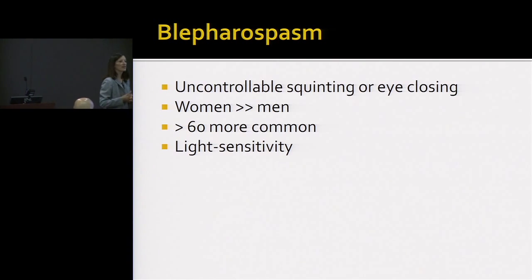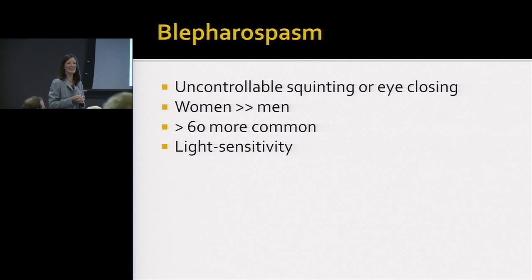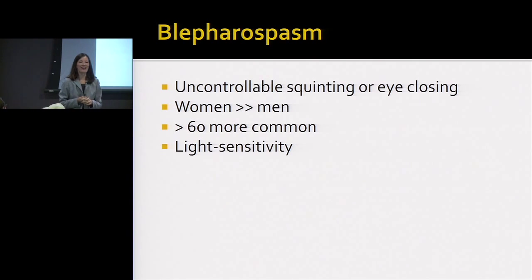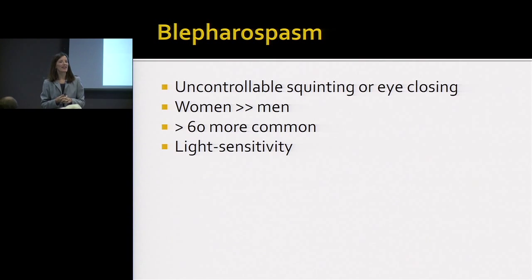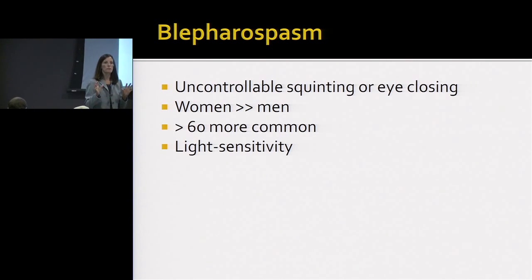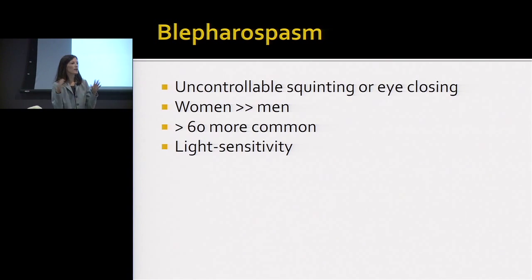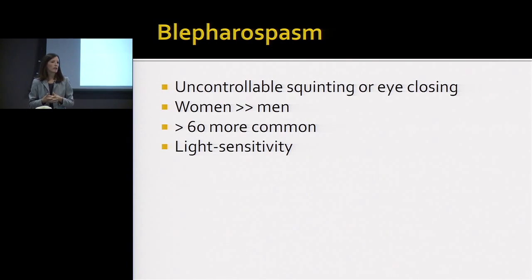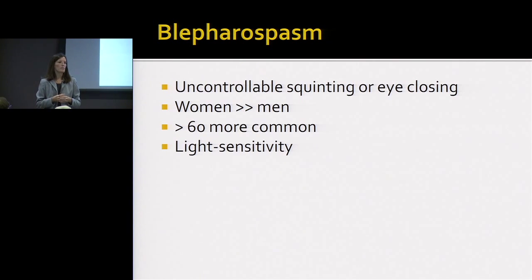There was a video of blepharospasm — as all of you know, blepharospasm is uncontrollable squinting or eye closing. In this case, the thought is that the basal ganglia aren't properly processing the information to simply blink or close your eyes; instead, it's doing extra movements that don't need to happen. Women are more affected than men, and it is more common in those over 60. Light sensitivity seems to be a pretty ubiquitous symptom of blepharospasm.